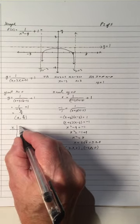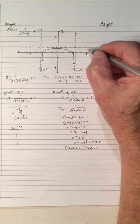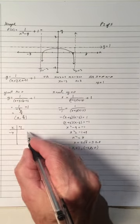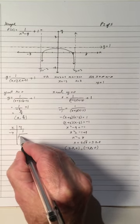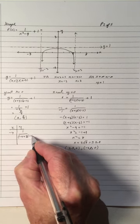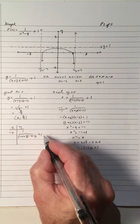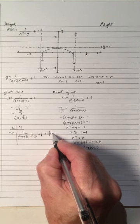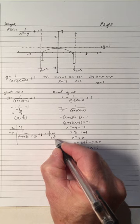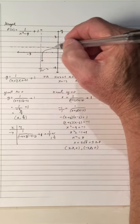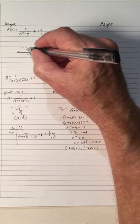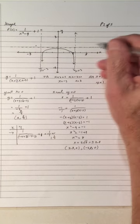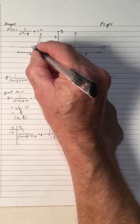Is the graph in here or here? Let's take the point x equals negative 4 and plug it into the equation. That gives 1 over (negative 4 plus 3)(negative 4 minus 3) plus 1, which is 1 over (negative 1)(negative 7) plus 1, so 1 over 7 plus 1, which is 1 and 1/7. So as x goes to negative infinity, y is approaching 1 from above — it's going up like that.